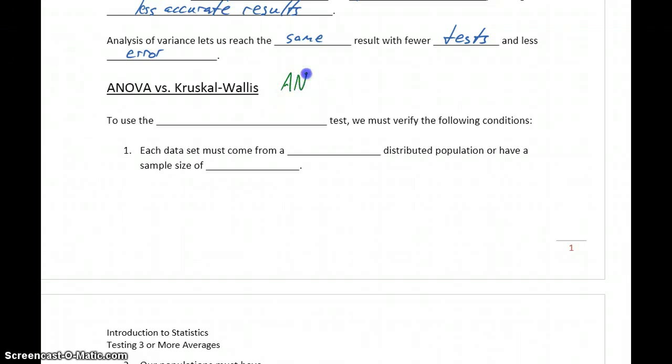If we spell this with a capital A, capital N for analysis, capital O for of, and then capital V, capital A for variance, that's where this acronym is coming from for ANOVA. Not really sure how somebody came up with that one, but that's our shortened notation for analysis of variance.